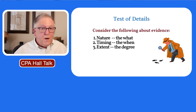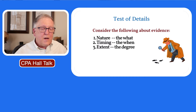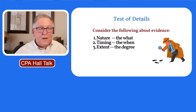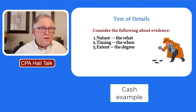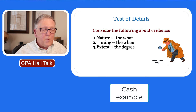The what, when, and how much questions are defined in the audit standards as nature, timing, and extent. As you're thinking about a response to a risk — say your cash balance and how cash could be misstated, whether intentionally through fraud or through error — in response to that risk, you're going to look at the bank reconciliation. That would be the nature of the procedure you're going to perform.